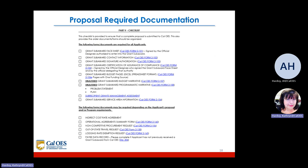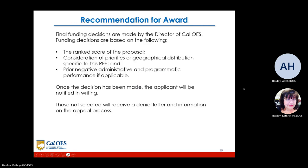The proposal also has required documentation as will be found in your RFP at the final pages. Each one of these forms needs to be filled out and you'll notice that there is a link available for you to get the most current version. The final funding decisions are made by the Director of Cal OES. Funding decisions are based on the rank score of the proposal, consideration of priorities or geographical distribution specific to this RFP, and prior negative administrative or programmatic performance if applicable.